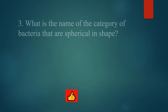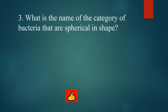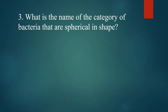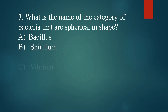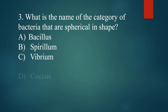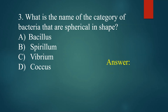What is the name of the category of bacteria that are spherical in shape? A. Bacillus. B. Spirillum. C. Vibrio. D. Coccus. Answer: D. Coccus.